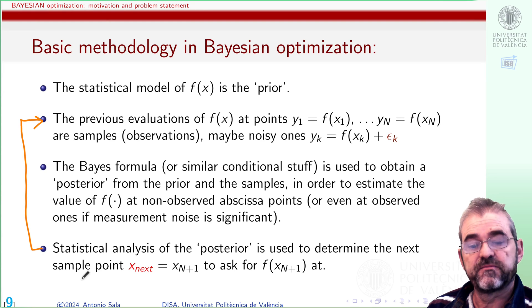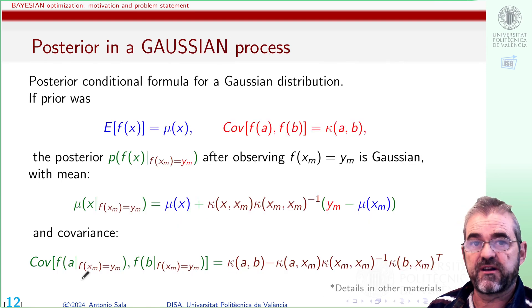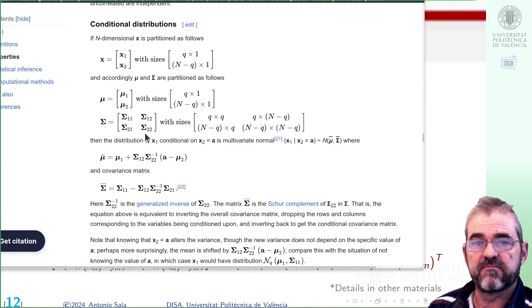Let us go on how this posterior on these random functions is obtained. That posterior, if we assume normal distribution Gaussian process, is obtained with the posterior conditional formulas for the normal distribution. These are the formulas, but first let us have a look at the clean version that we have in Wikipedia.